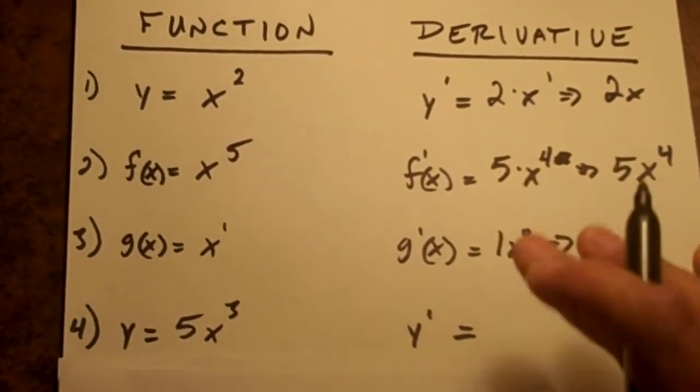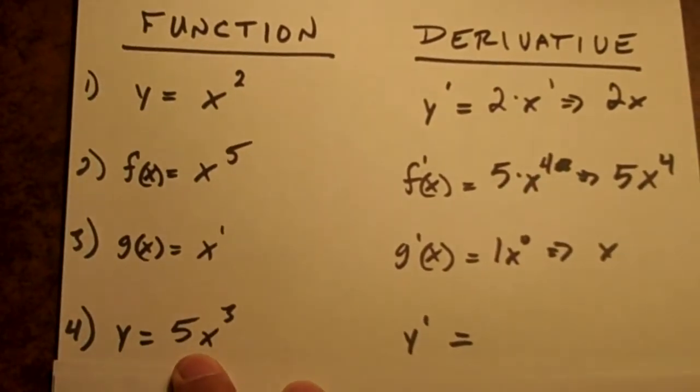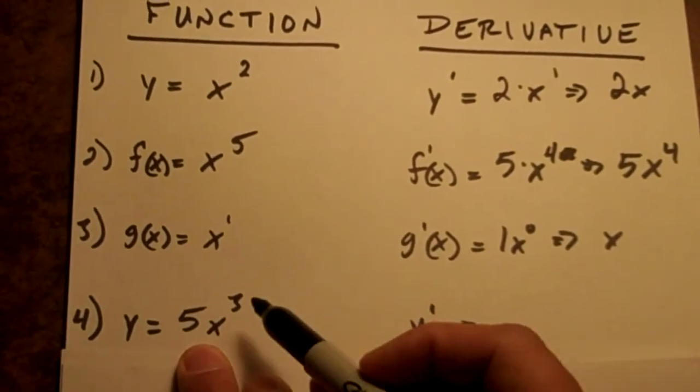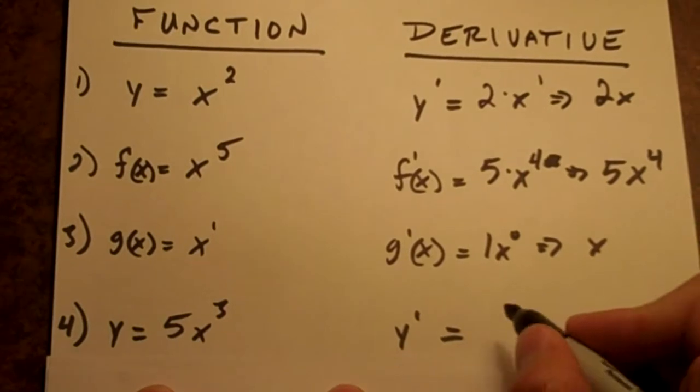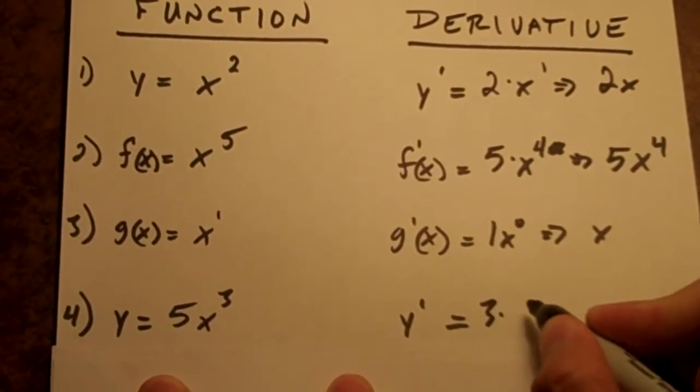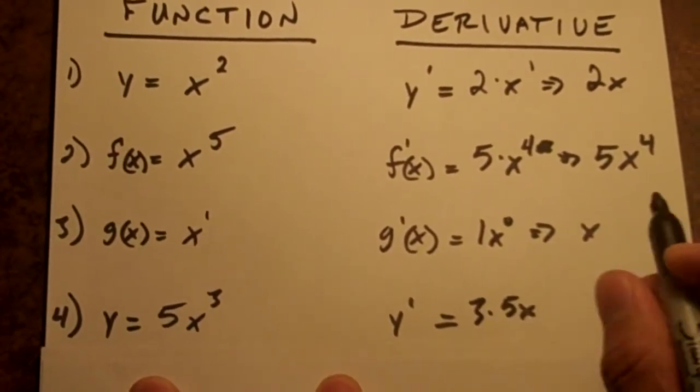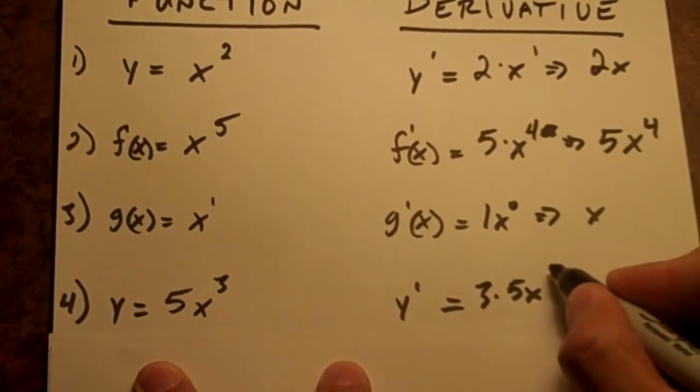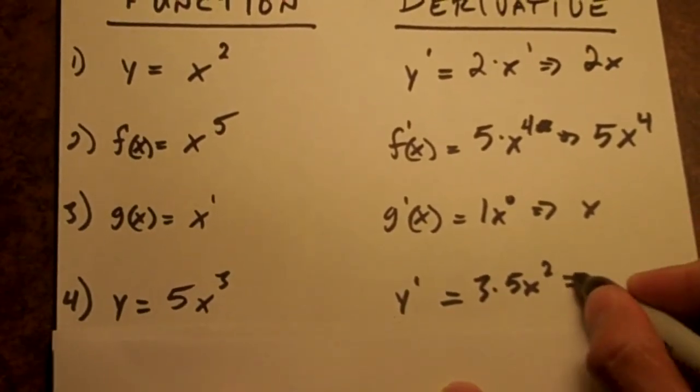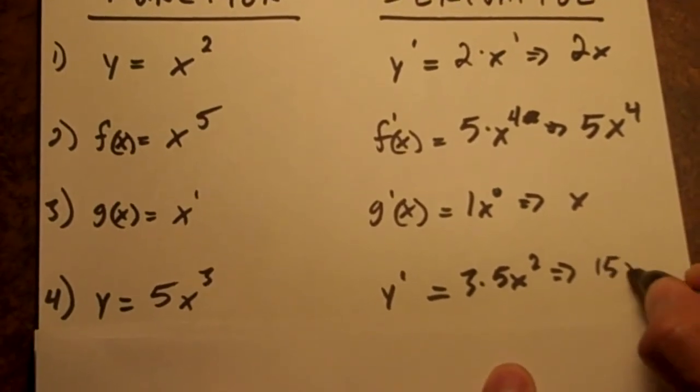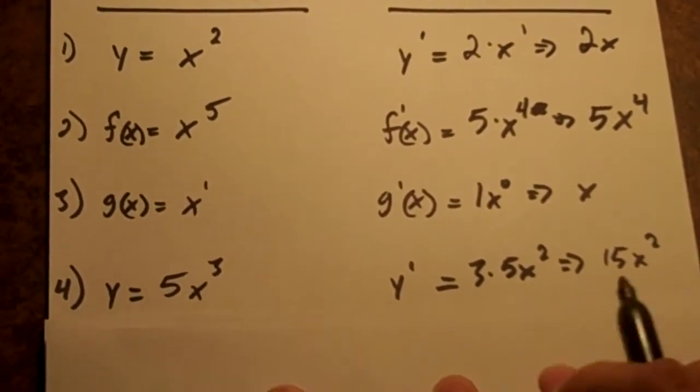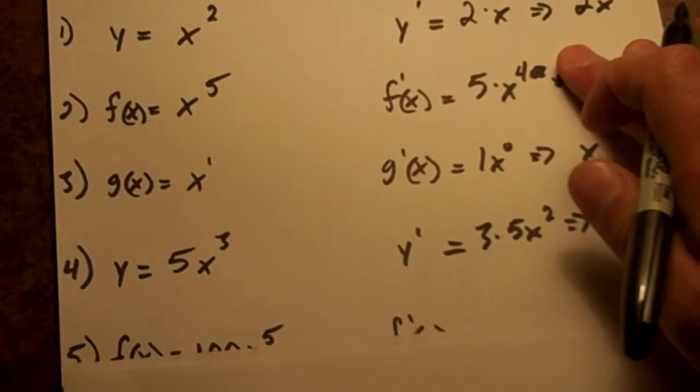Now we have a constant out front. We're going to use the same technique here with the constant out front. What we're going to do is take this 3 and bring it out front and multiply it. So it would be 3 times 5x and then 3 minus 1 is 2 squared. If you multiply 3 and 5 you get 15x squared. That's it. That's the derivative of that function.